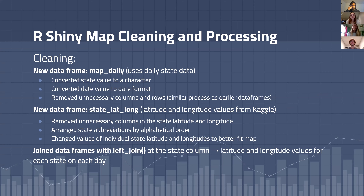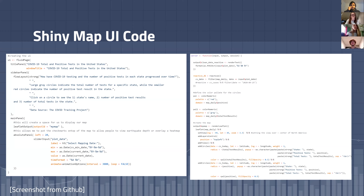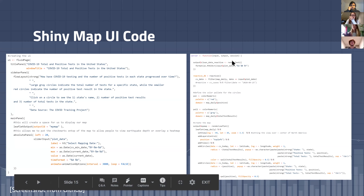For the second part of our visualization, we wanted to make an interactive R Shiny map. To do this, we did some additional cleaning by creating another data frame using the daily state data and then joining that with state latitude and longitude data so that it can be plotted on the map in R Shiny. Here's a little snippet of some of our code with the UI and the server so that we can create a slider that adjusts for days and shows the progression of tests over time.